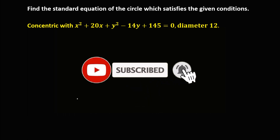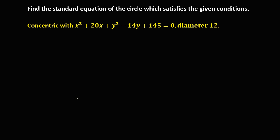Welcome to MathStorya. Let's have this problem: find the standard equation of the circle which satisfies the given conditions. We need to rewrite the given as x squared plus y squared plus 20x minus 14y plus 145 equals 0.